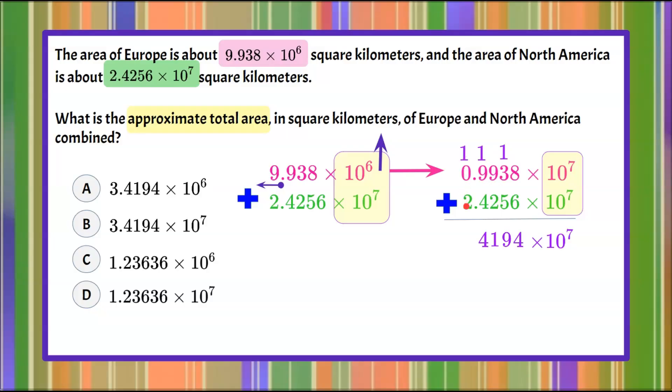1 plus 0 is 1, plus 2 is 3. Don't forget the decimal point. So we have 3.4194 × 10^7 as the combined approximate total area, and that is answer choice B.